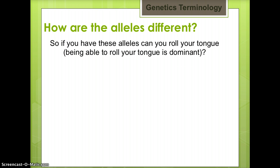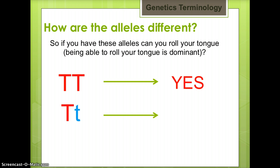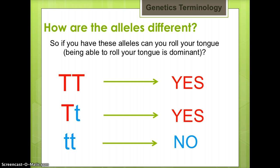So, if you have these alleles, can you roll your tongue? Remember, being able to roll your tongue is dominant. Will a person with the alleles capital T capital T be able to roll their tongue? Yes, because a dominant allele is present. Will a person with the alleles capital T lowercase t be able to roll their tongue? Yes, because a dominant allele is present. Will a person with the alleles lowercase t lowercase t be able to roll their tongue? No, because only recessive alleles are present.